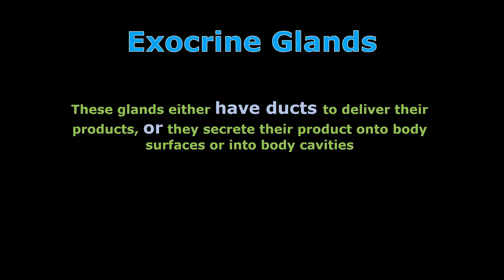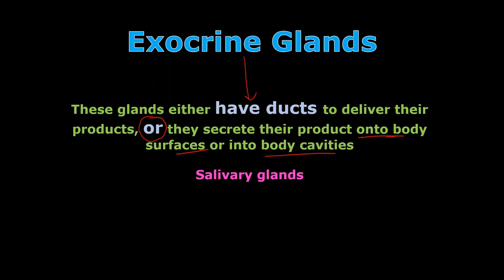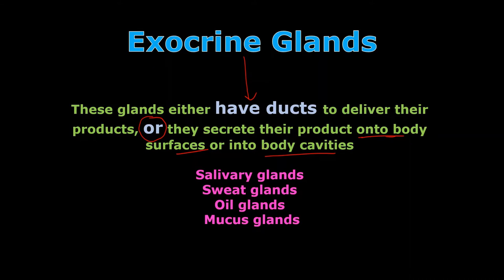Exocrine glands are the opposite — they have ducts, or they secrete their product onto body surfaces or into body cavities. So something like a sweat gland that doesn't have a duct may still be considered an exocrine gland if it secretes its product straight onto the surface of the body. Salivary glands, sweat glands, oil glands, mucus glands are all examples of exocrine glands. Not all of them have ducts — they may secrete their product directly into a cavity or onto a surface.